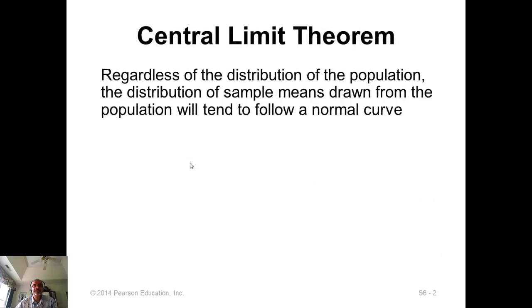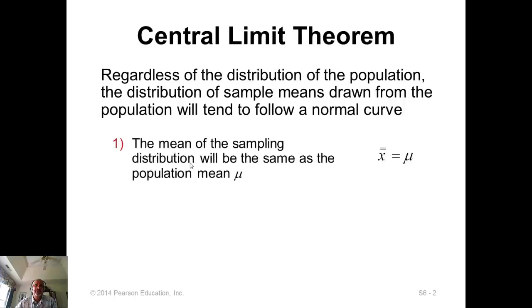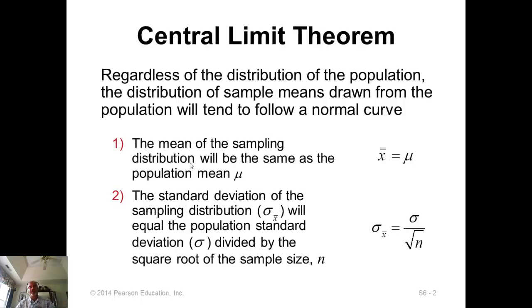The central limit theorem says, regardless of what the population distribution is, the underlying population distribution, if you take a sample and average the sample values, and you take the sample average, and collection of sample averages, if you repeat this process again and again, the collection of sample means will follow a normal distribution. So the mean of that sampling distribution will be mu, and the standard deviation of that X-bar population will be sigma over square root of n.